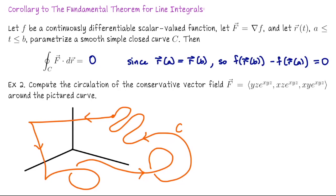Suppose I want to compute the circulation of this conservative vector field capital F, which is a vector field in R3, around the piecewise smooth simple curve C I just sketched. Since it's a conservative vector field and we have a piecewise smooth simple curve C, the circulation is 0.